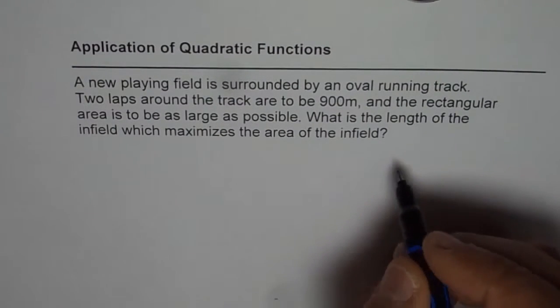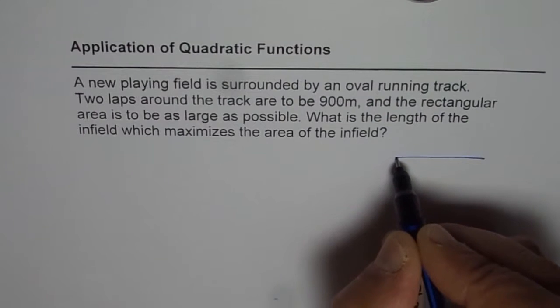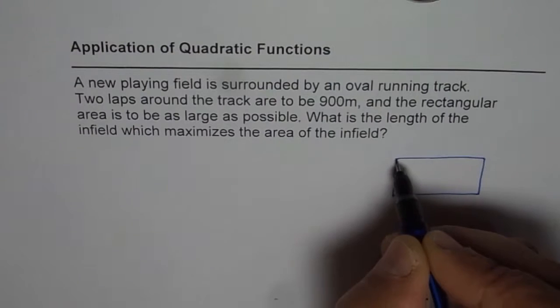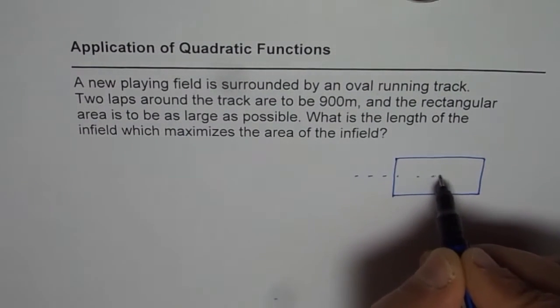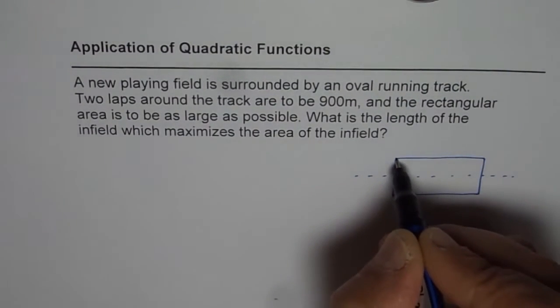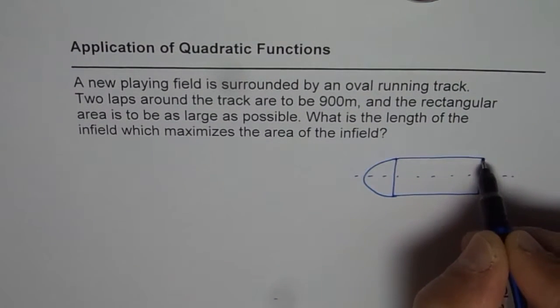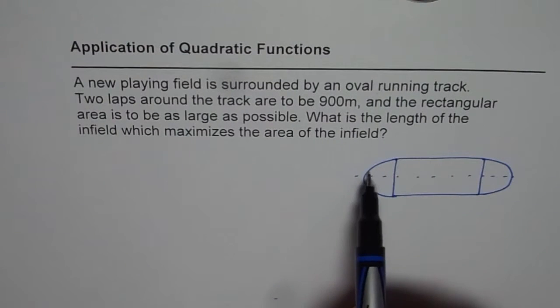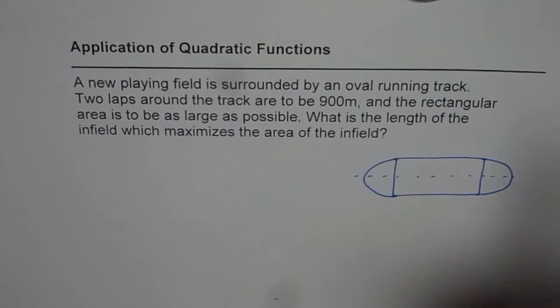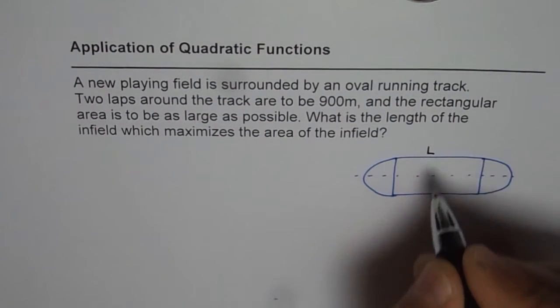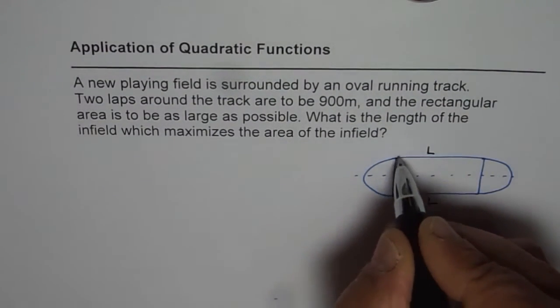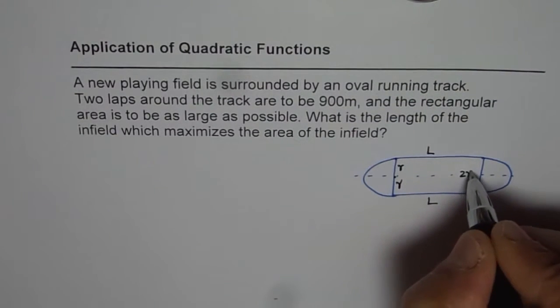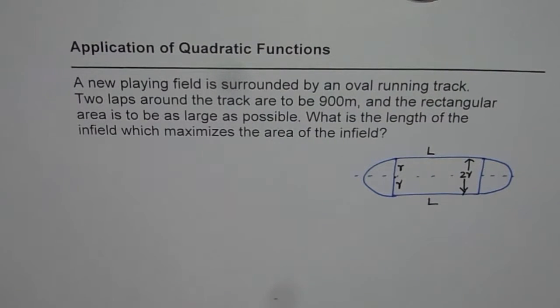What is the length of the infield which maximizes the area of the infield? So let's draw a diagram to represent the situation. Let's say this is our infield, the rectangular infield. Now what we have here is, let me just draw some dotted lines to help us. So we have a circular like both sides. So that is the oval track. So let us assume that the length of this infield is L and the width is 2R. Let's say 2R is the width of this rectangular field.